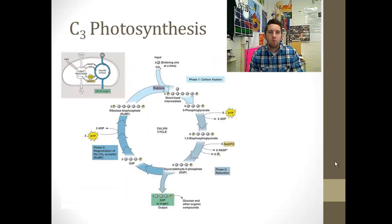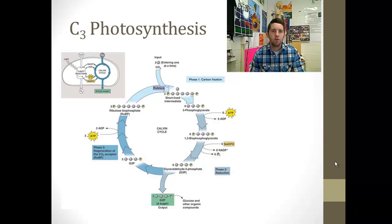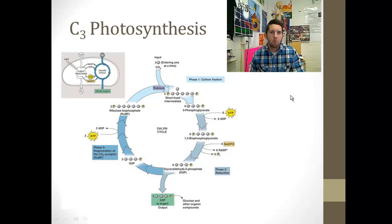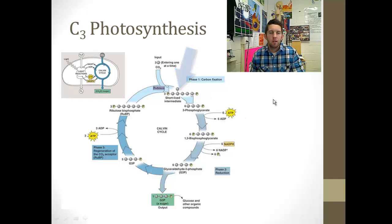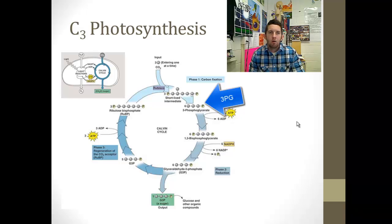First, let's look at where we're coming from. This is the Calvin cycle — we already know it. This is also known as C3 photosynthesis. It's the regular pathway we've learned. The reason it's called the C3 pathway is because carbon is fixed out of the atmosphere by Rubisco. It's attached to RuBP to make a 6-carbon short-lived intermediate and then 3PG. 3PG is the first stable intermediate in the Calvin cycle — it's a 3-carbon molecule. Therefore, this is the C3 pathway.